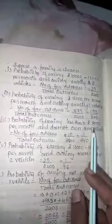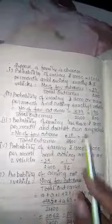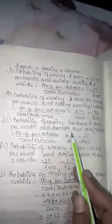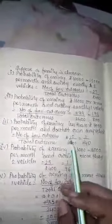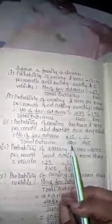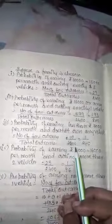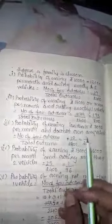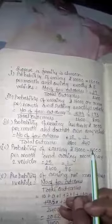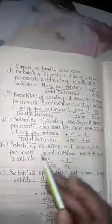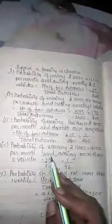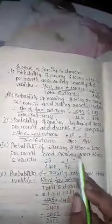Probability of earning less than 7,000 and not owning any vehicle — zero vehicle. There are 10 families in this category. So P = 10/2400. Cutting down, we get 1/240.